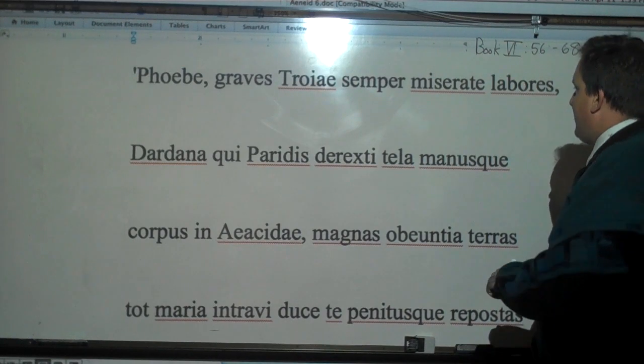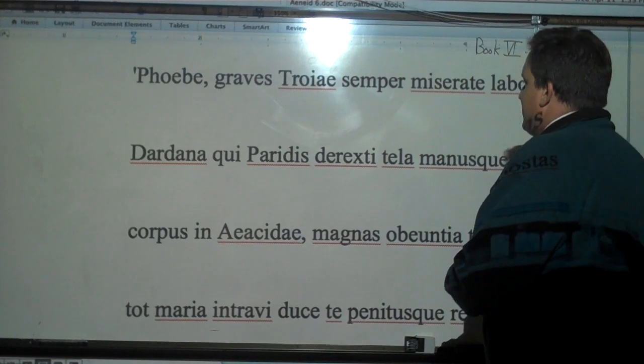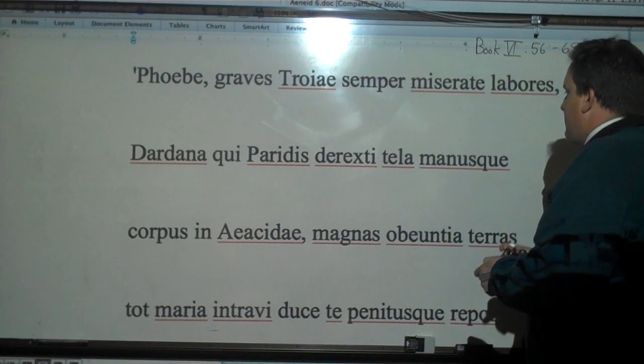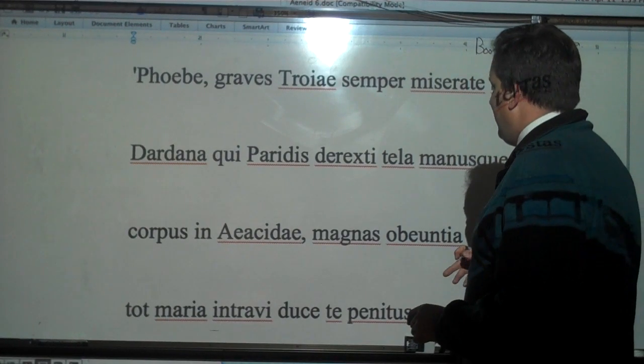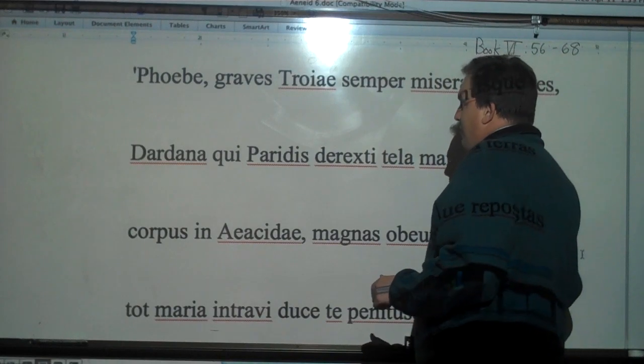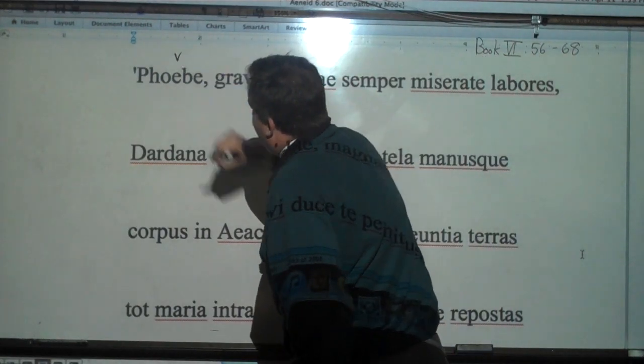appearing that Aeneas and his men have stopped to look at this previous change. And then Aeneas answers back. Phoebe. Now, Phoebe is a vocative here,